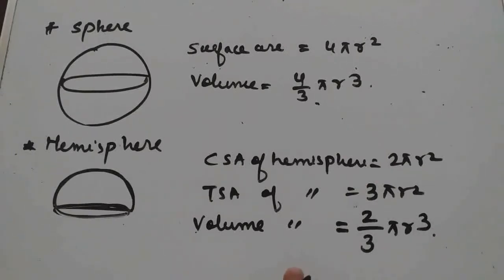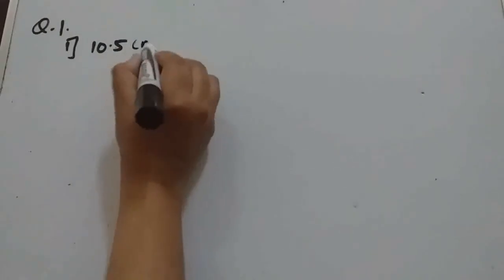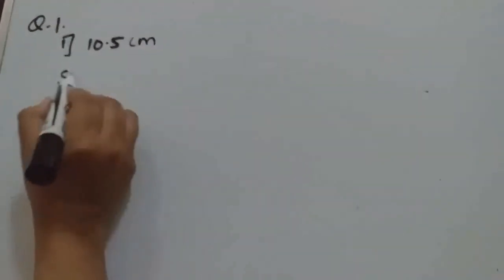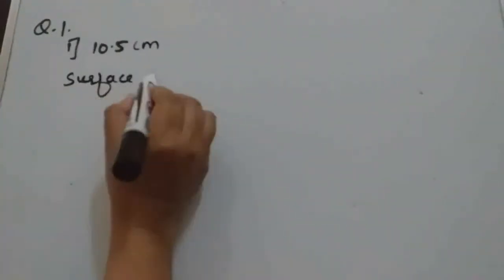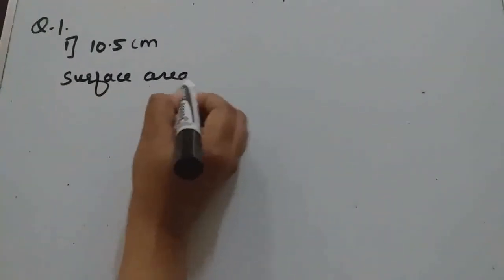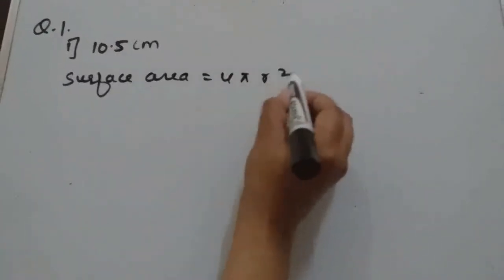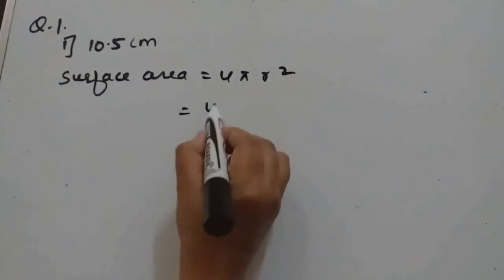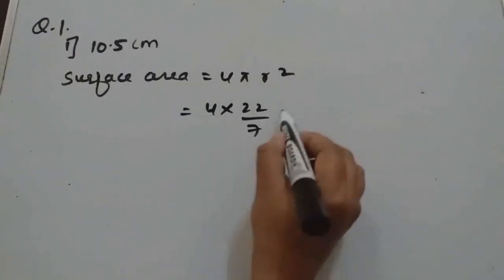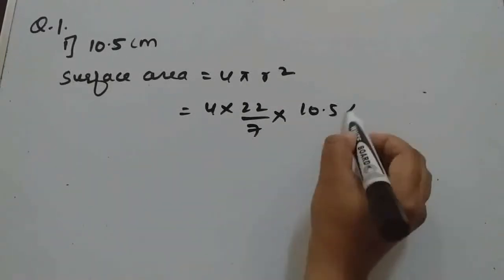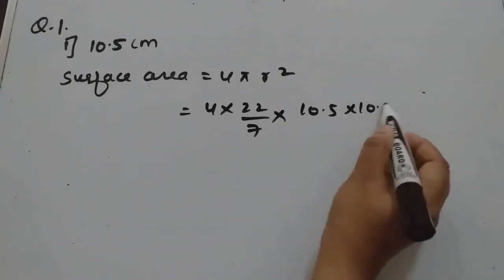So this is all about the formulas for sphere and hemisphere. Question 1: Find the surface area of a sphere of radius 10.5 cm. We know surface area is 4πr², so 4 × (22/7) × 10.5 × 10.5.